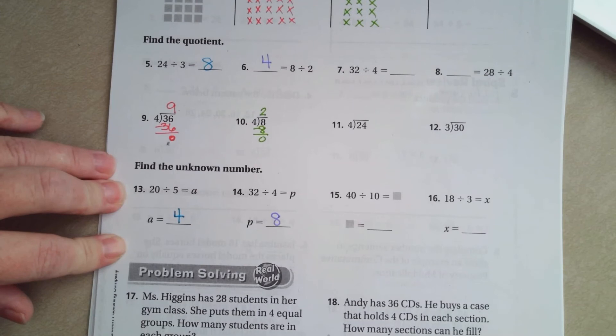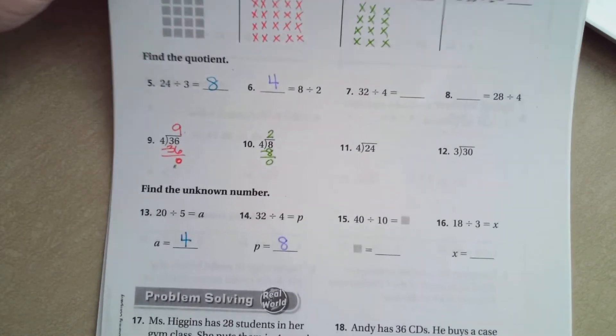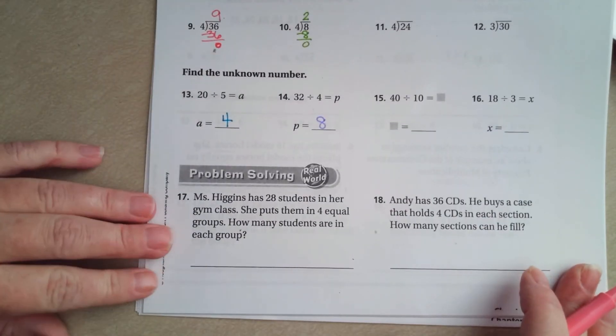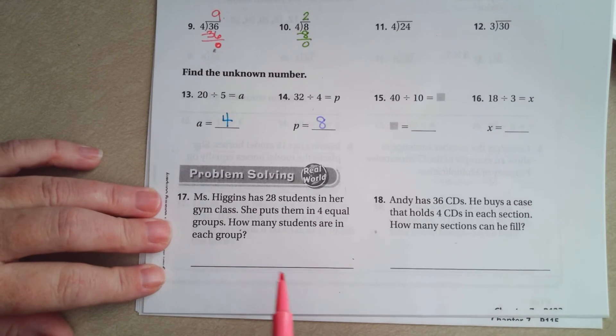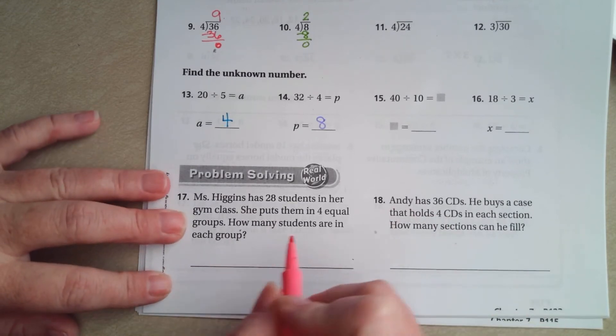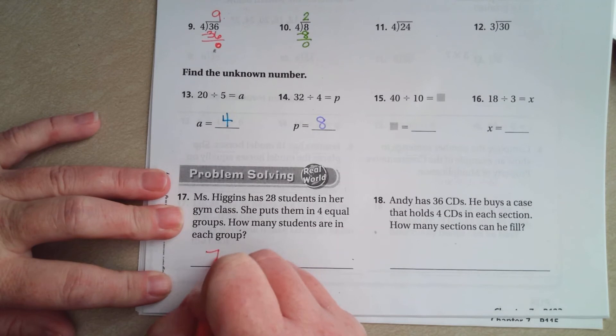You guys go ahead and do 15 and 16. We're going to go down and do 17. Ms. Higgins has 28 students in her gym class. She puts them into 4 equal groups. So 28 divided by 4. 4 times what is 28? Well, 4 times 7 is 28, so 7 students.